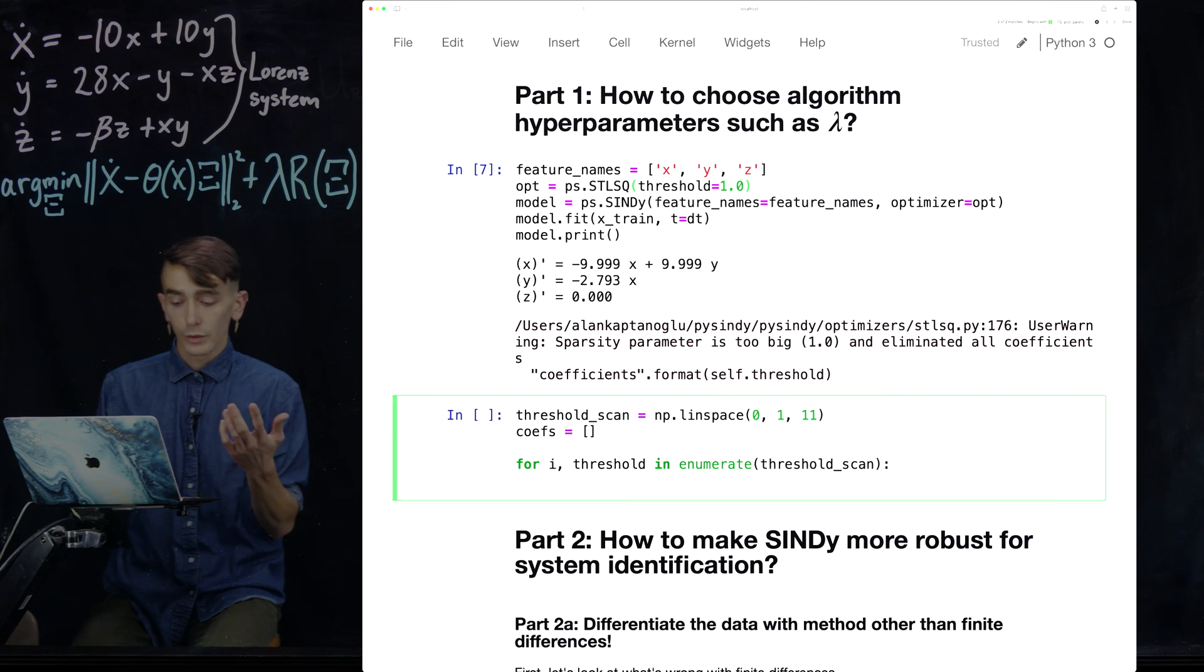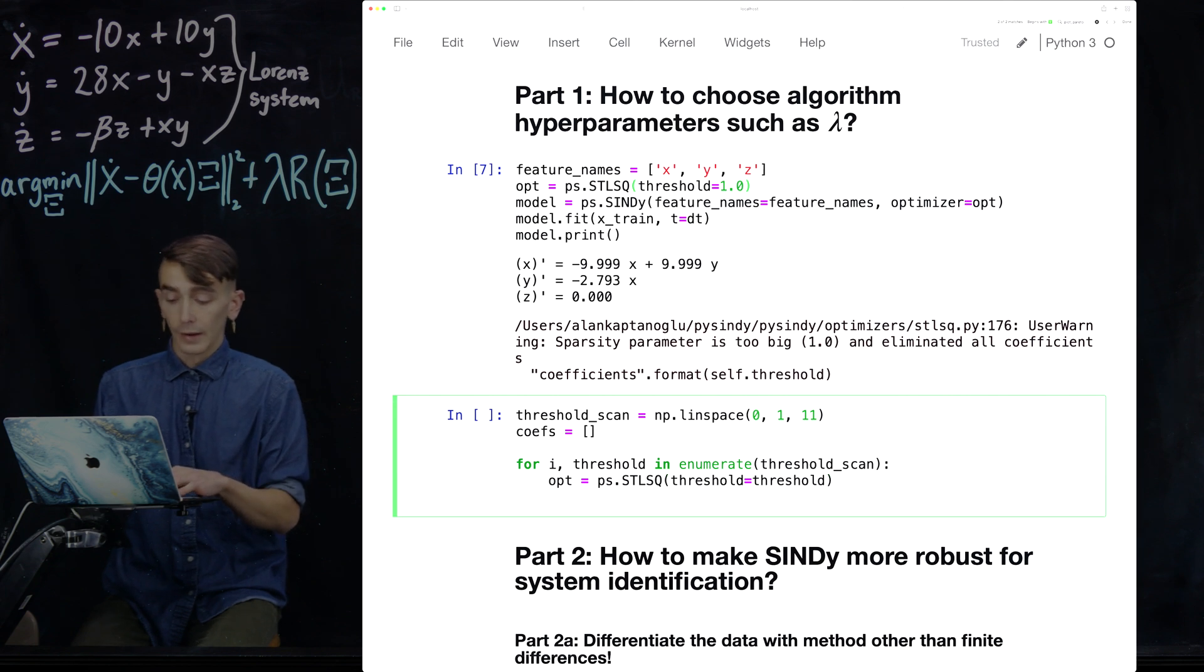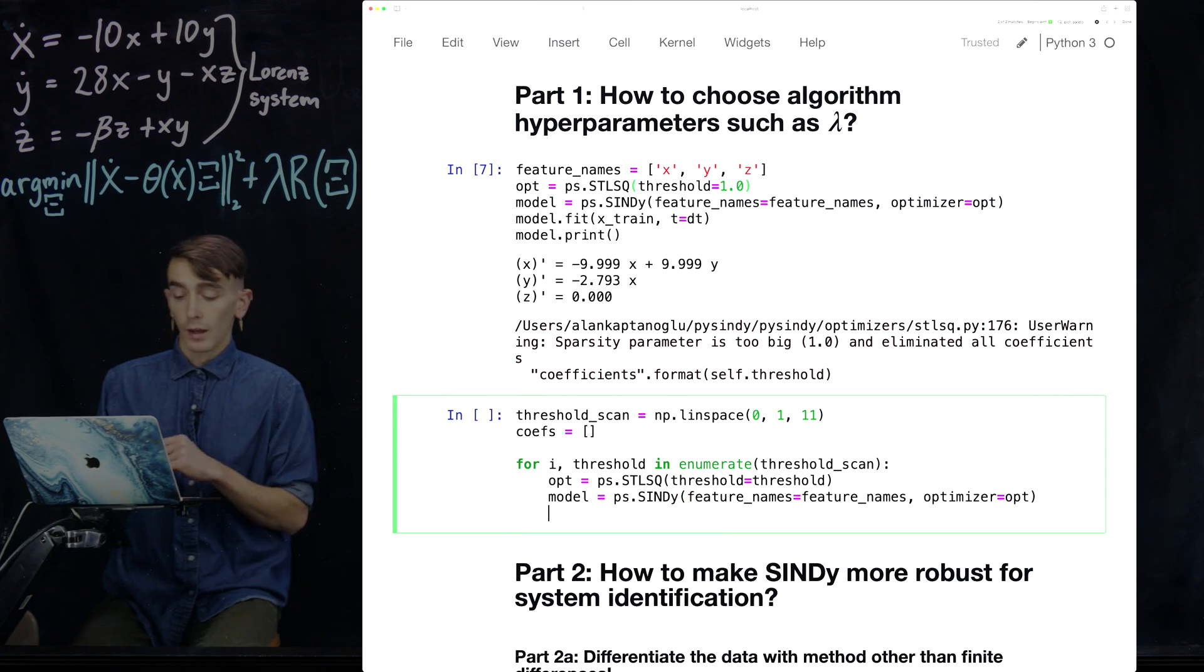And then for i and threshold in enumerate threshold scan. So we're just looping through the thresholds. We're going to define our optimizer again to be this sequentially threshold least squares. And we're setting the threshold equal to the one that we're looping through. Again, model is, we're just going to fit a simple model. Optimizer equals opt. Great. And then we fit the model.